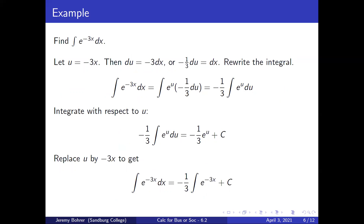Find the integral of e to the negative 3x dx. Let u equal negative 3x. Then du equals negative 3 dx, or negative one-third du equals dx. We rewrite the integral: the integral of e to the negative 3x dx equals the integral of e to the u times negative one-third du, which is negative one-third times the integral of e to the u du. We integrate to get negative one-third e to the u plus c.